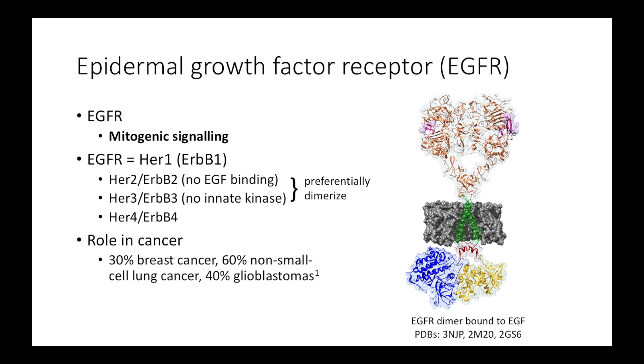Given that signaling triggers cell growth, it's no surprise that these receptors play a huge role in the development of cancer. In fact, it was the first receptor protein identified as an oncogene, and it's currently a major target for pharmaceutical cancer therapies.